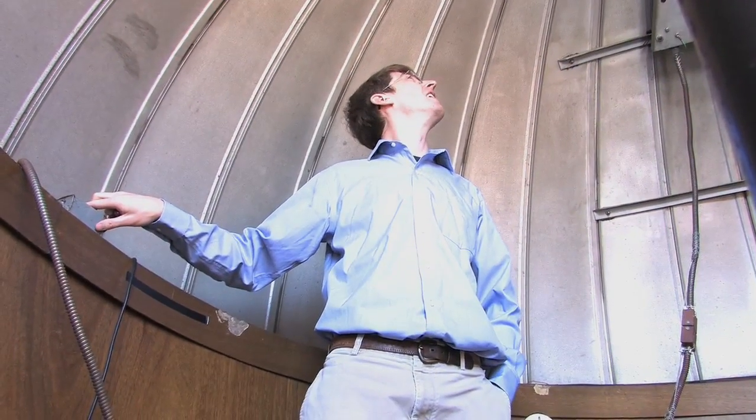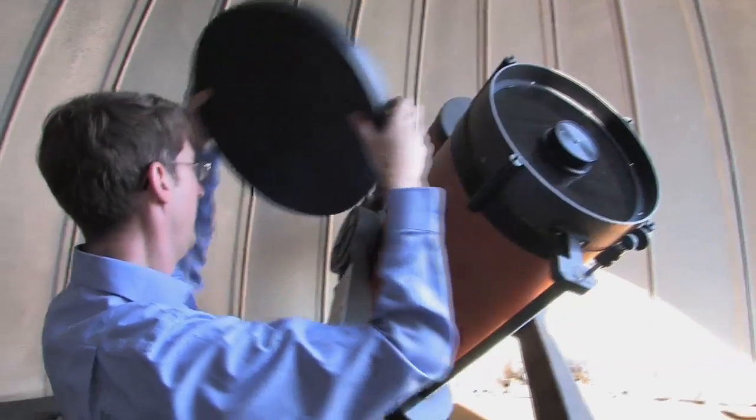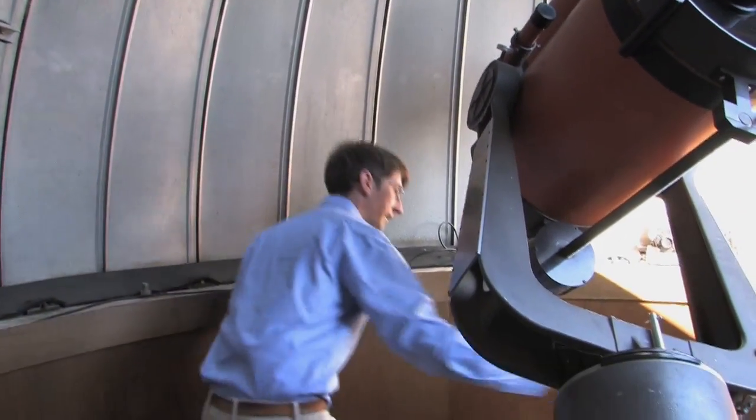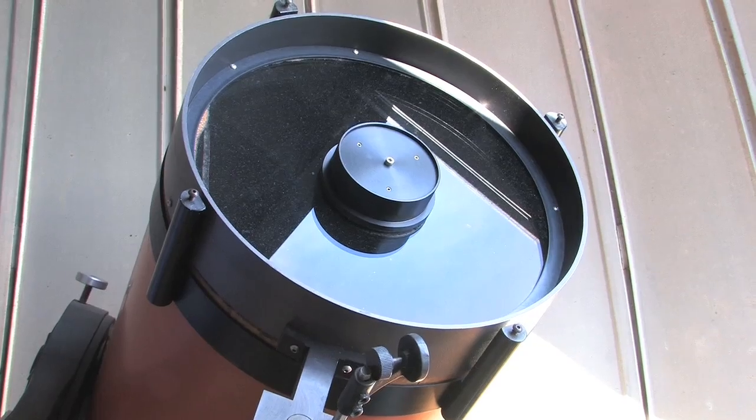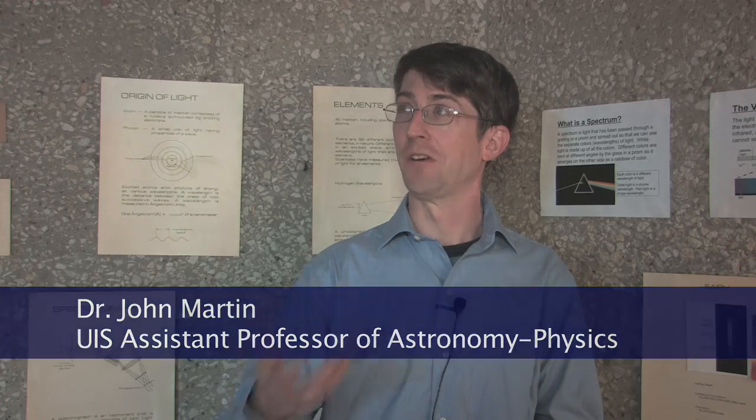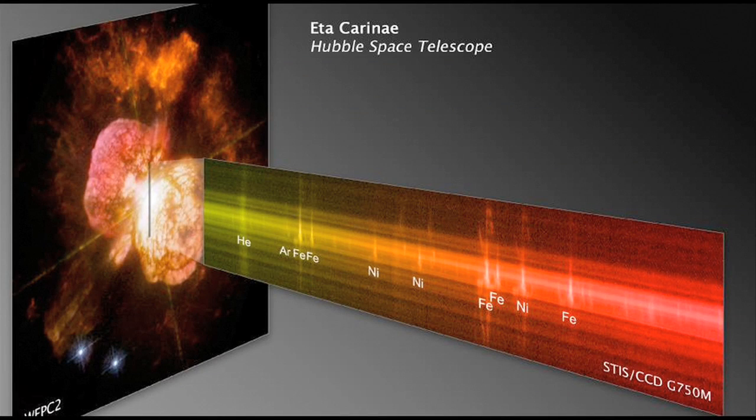My primary area of research is stars and what stars are made out of. I study them using mainly a technique called spectroscopy. Light from the star comes into the telescope and then goes into what's called a spectrograph, which basically is a prism or an optical element called a grating that breaks the light up into its rainbow of colors.